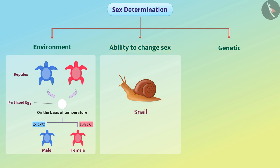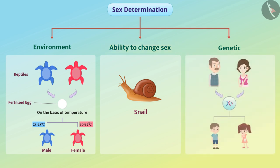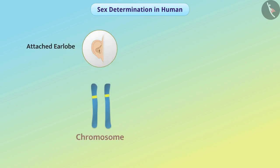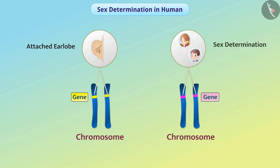Sex determination in humans is genetically determined. Let's understand the sex determination in humans. In the previous video, we learned that the expression of a trait depends on the gene. Sex determination of zygote also depends on genes.